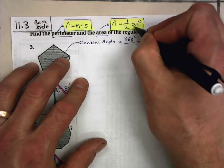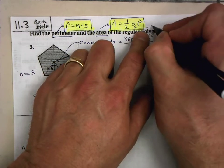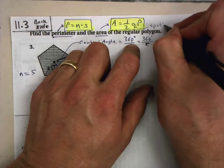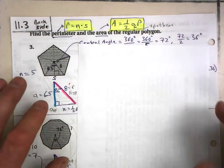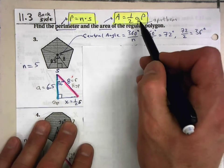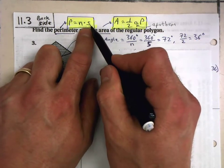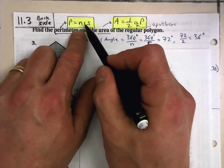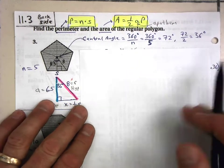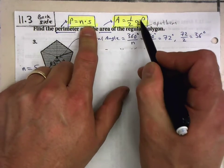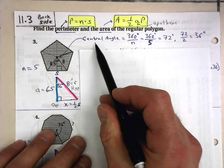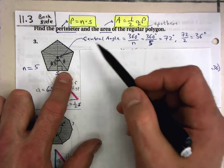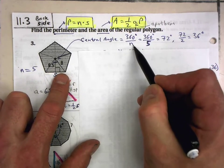Capital P is your perimeter. What we want to do is find the length of the apothem and also the length of each side. Once we have those two things, plus the number of sides, that's all we need. To find the length of the side and the apothem, we first find the central angle — 360 divided by the number of sides.